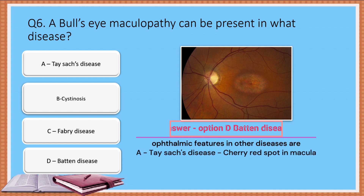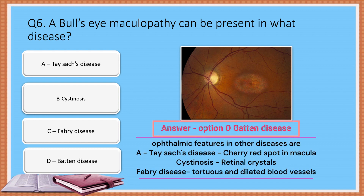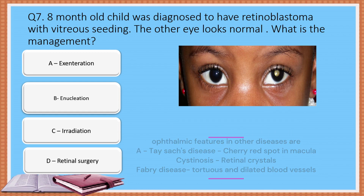The correct answer is Batten disease. The ophthalmological feature in Tay-Sachs disease is cherry red spot. Retinal crystals are present in cystinosis. Dilated and tortuous vessels are seen in Fabry disease.